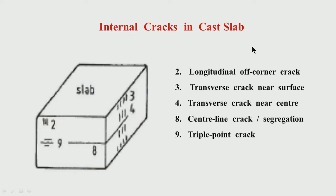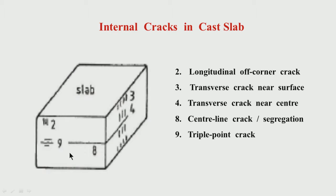Now let us come to internal cracks in cast slab. Having talked about surface cracks, we now look at internal cracks. This is the width of the slab, this is the thickness, and this is the length. We have to look at the cross-section — you cannot see internal cracks on the surface. Looking at the cross-section, let us see what cracks are present.